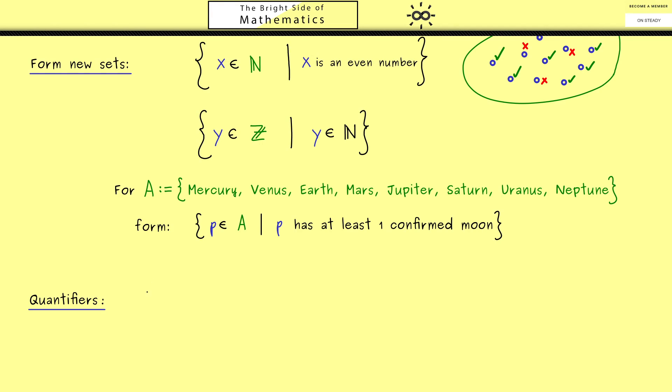The first one is the 'for all' quantifier, a reversed A. This means you go through all the objects using the correct variable. The other one is the reversed E which stands for 'it exists,' meaning you find at least one object. You should always read that as 'it exists at least one object x,' or in short, 'it exists x.'